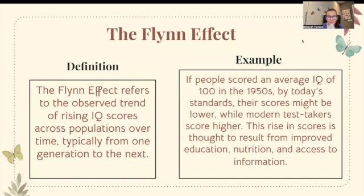The Flynn effect refers to the observed trend of rising IQ scores across populations over time, typically from one generation to another. For example, people who scored an average IQ of 100 in the 1950s might seem low by today's standards, while modern test takers are scoring higher. This rise is thought to result from improved education, nutrition, and access to information. In the 1950s and 60s, we did not have the internet, and that sheer access to education and information has helped IQ scores go up — that is the Flynn effect.